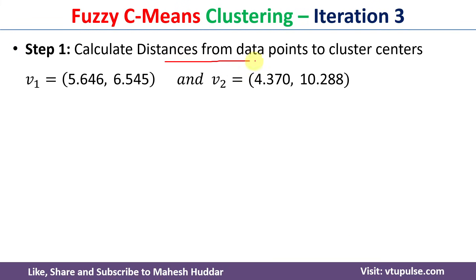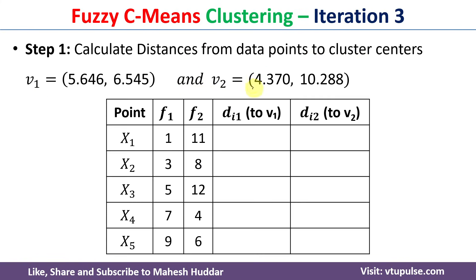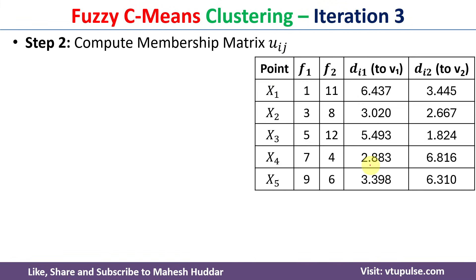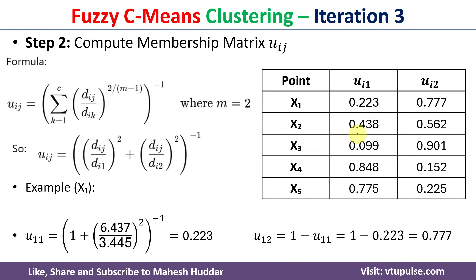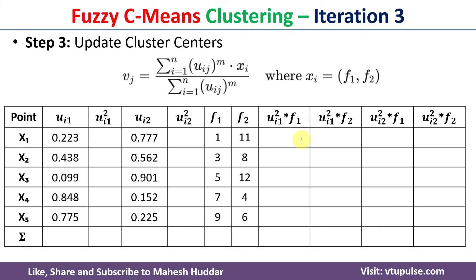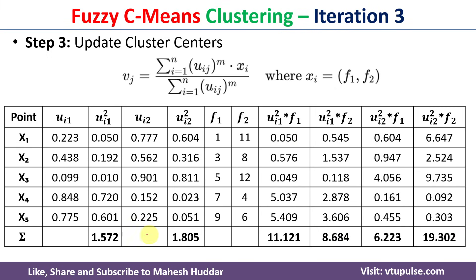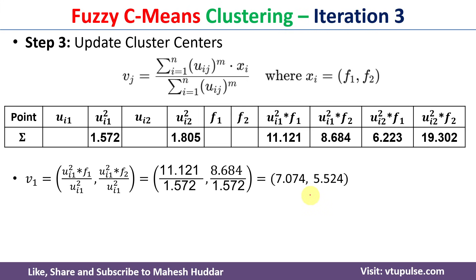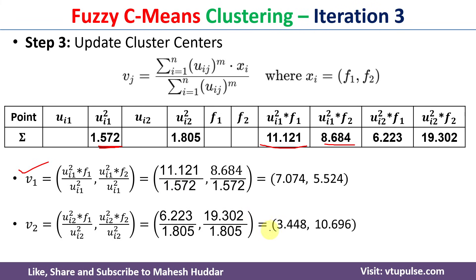For the third iteration, we again calculate distances from data points to the updated centers v1=(5.646, 6.545) and v2=(4.370, 10.288), then compute the membership matrix uij. After finding the required intermediate values and their sums, the updated cluster centers are v1=(7.074, 5.524) and v2=(3.448, 10.696).